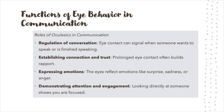Our eyes serve several crucial functions during communication. First, they help to regulate conversations. For example, we often use eye contact to signal that we are ready to speak or that we have finished a thought. Eye behavior also helps to establish connections and trust — maintaining eye contact often shows that we are engaged and confident.